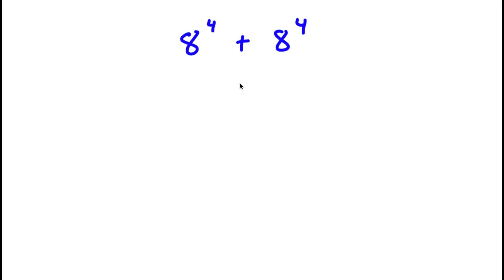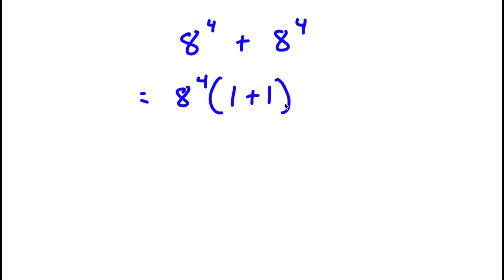In this problem I have 8 to the power of 4 plus 8 to the power of 4. To solve this, I'm going to factor out 8 to the power of 4. So I have 8 to the power of 4 times — 8 to the power of 4 divided by 8 to the power of 4 is 1 — so I have 8 to the power of 4 times 1 plus 1, which simplifies to 8 to the power of 4 times 2.